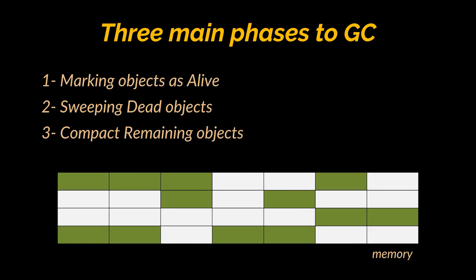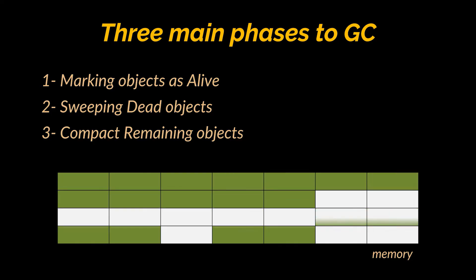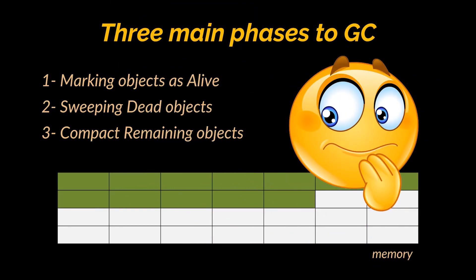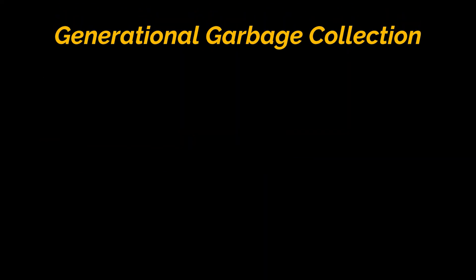Finally, in the third phase, the remaining objects in memory are compacted. The dead objects removed during the sweep phase may not necessarily be next to each other, so you can end up with fragmented memory space. This phase ensures memory is compact after deletion, so the remaining objects are in a contiguous block at the start of the heap. However, having to mark and compact all objects in a JVM every single time is inefficient, and to solve this, Java garbage collectors implement a generational garbage collection strategy.